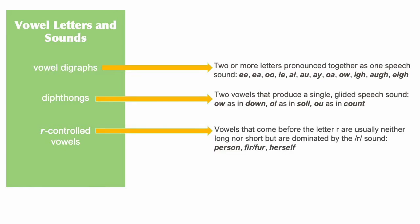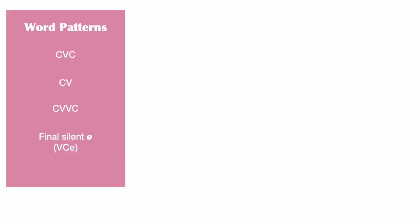Lastly for the vowels group is R-controlled vowels. When a vowel comes before the letter R in a word, it's barely pronounced as a separate sound. Instead, the R sound dominates it. Last but not least, let's look at some common whole word spelling patterns.